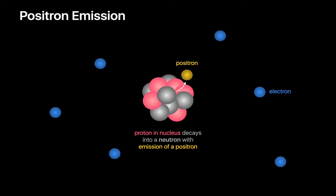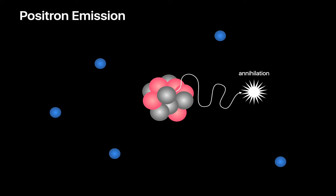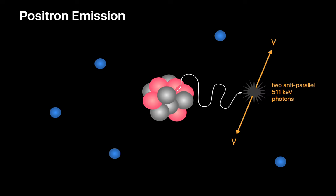Positrons are the antimatter counterpart of electrons. They have the same mass as an electron, but carry a positive electric charge. There's always a swarm of electrons buzzing around the nucleus of an atom, and whenever a positron happens to encounter one of these electrons, they annihilate each other, which results in the conversion of their respective masses into energy, typically in the form of two gamma-ray photons traveling 180 degrees away from each other.